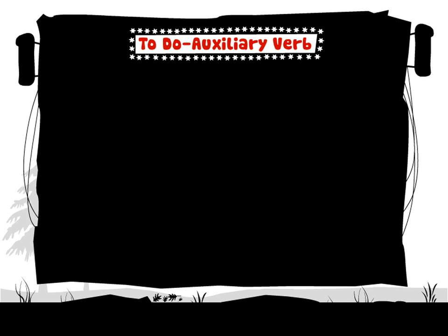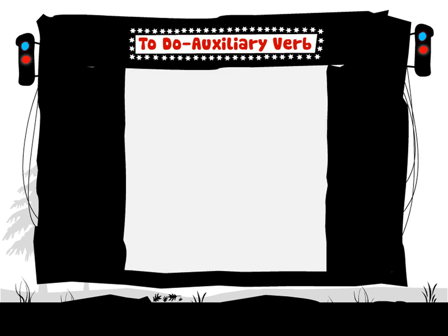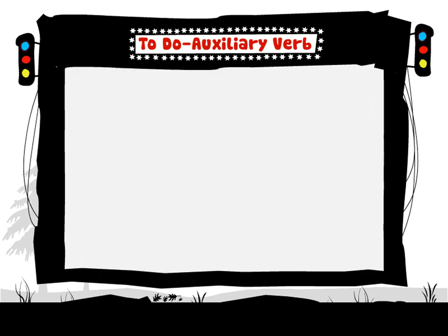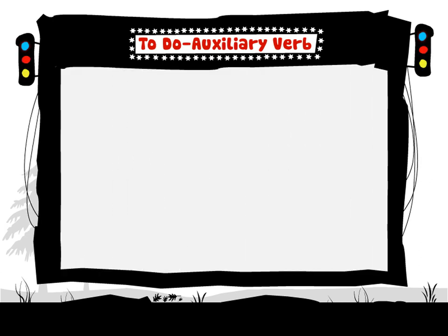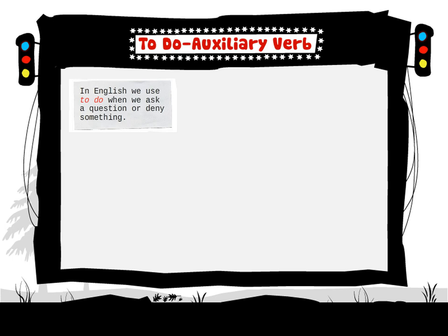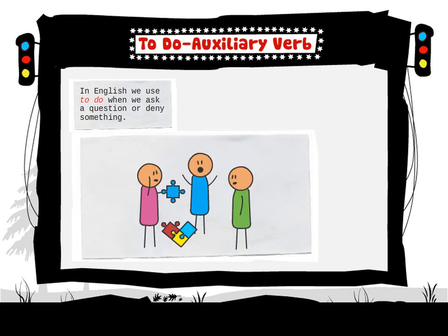To do — auxiliary verb. In English we use 'to do' when we ask a question or deny something.